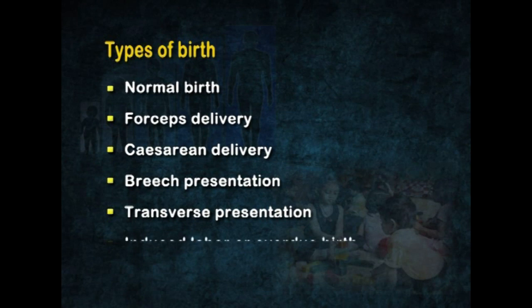The next type is induced labor or overdue birth. When spontaneous labor does not occur at the expected time, delivery is induced either by puncturing the bag of water or by injecting medicines or hormones to stimulate uterine contractions. This type of delivery is called induced labor. These are the different types of the birth process.